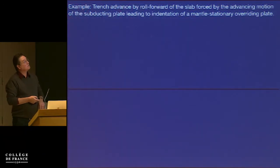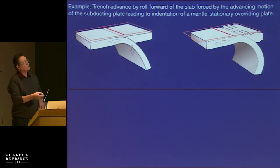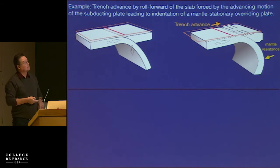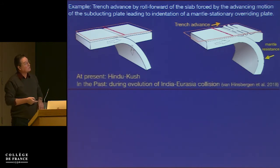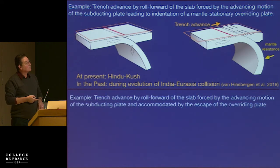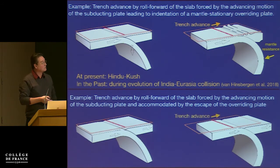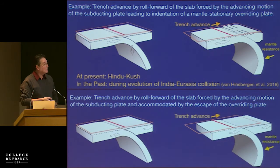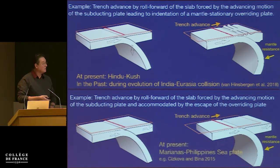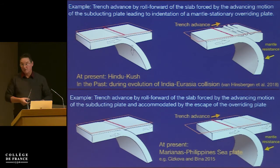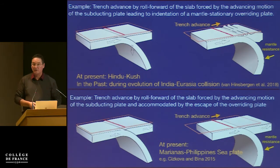Some other examples: slab roll forward leads to trench advance and different mantle resistance. In another case, you create the Himalayas, or you can let the upper plate escape. The example here is the Mariana-Philippine Sea Plate. To interpret all of this requires looking at motions at the surface in the mantle frame.